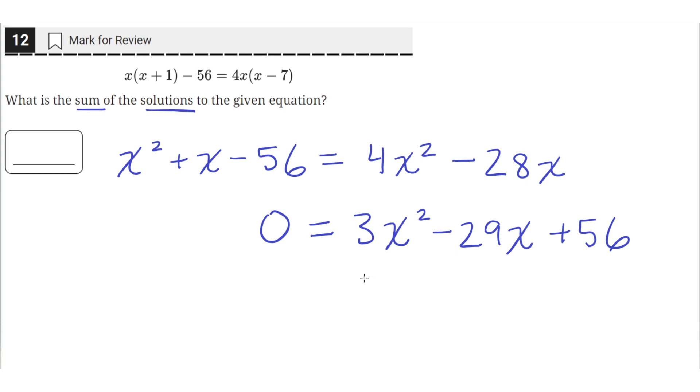Now we need to factor this quadratic. But this doesn't seem to be factorable by grouping, so we should use the quadratic formula instead. The quadratic formula goes like this: x equals negative b plus or minus square root of b squared minus 4ac all over 2a. And these constants a, b, and c come from a quadratic equation of the form 0 equals ax squared plus bx plus c.